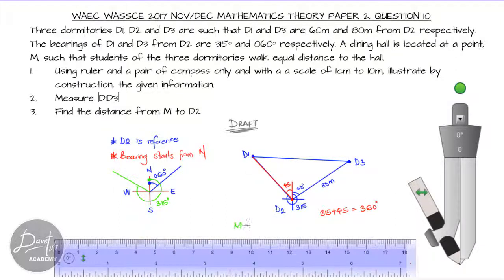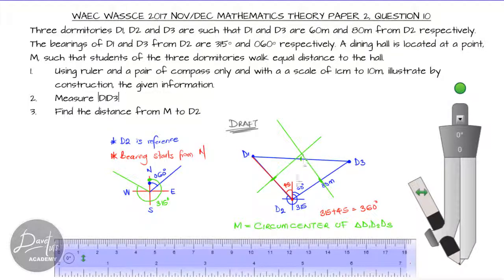We can join D1 and D3 and measure. To find the circumcenter — the point M that is the same distance from all three dormitories — we find the perpendicular bisector of each of the three sides of our triangle. Their point of intersection is the circumcenter. Having this understanding, we can proceed to our construction, noting that 1 centimeter represents 10 meters.